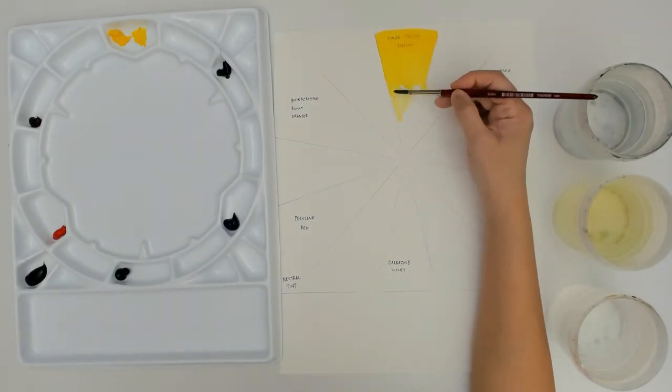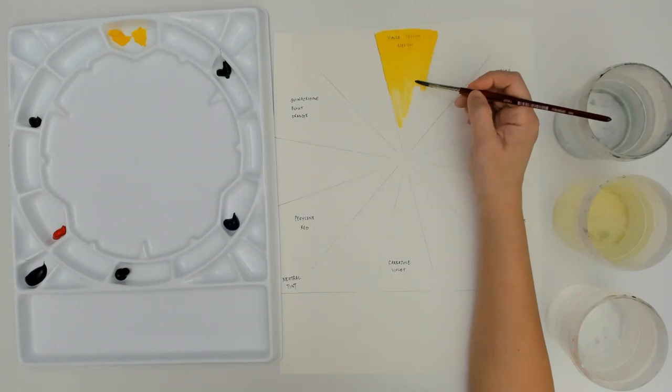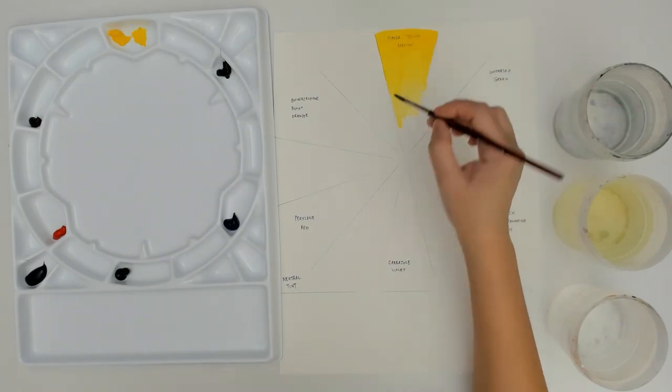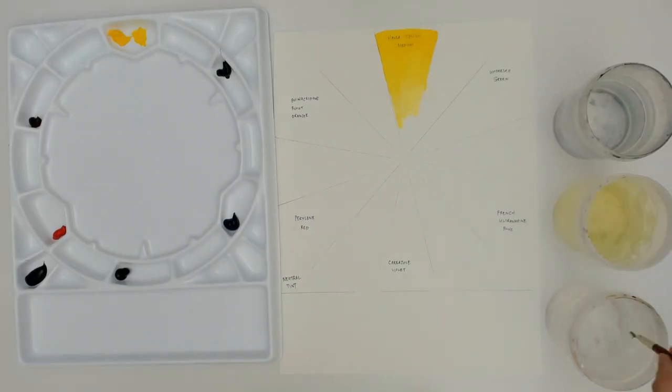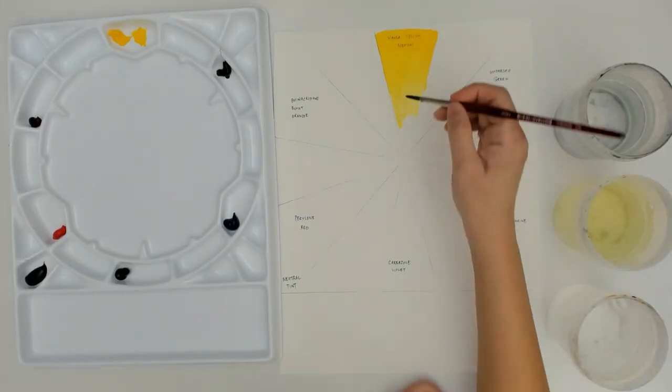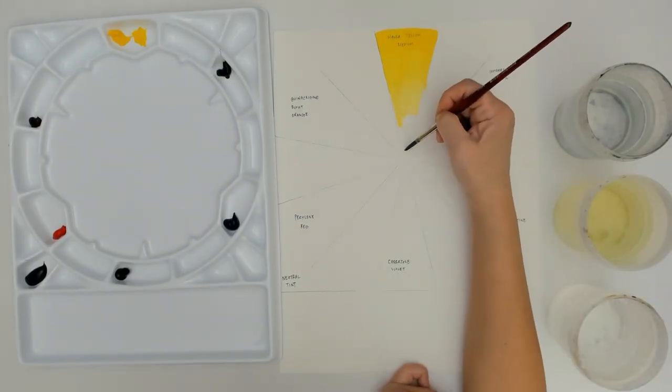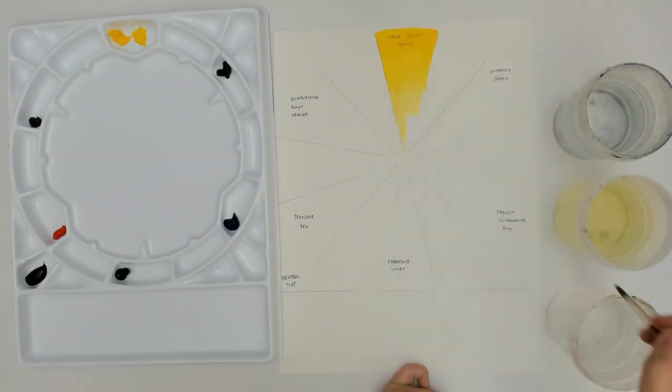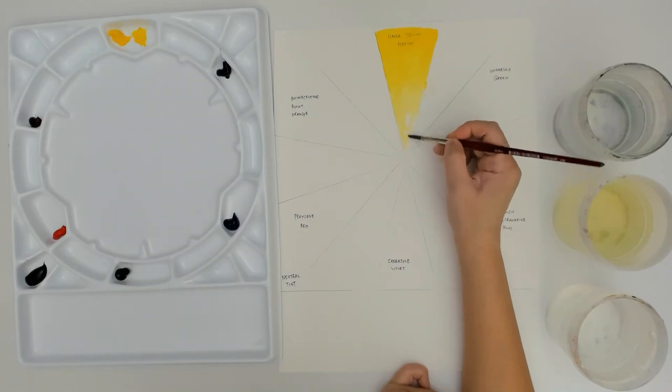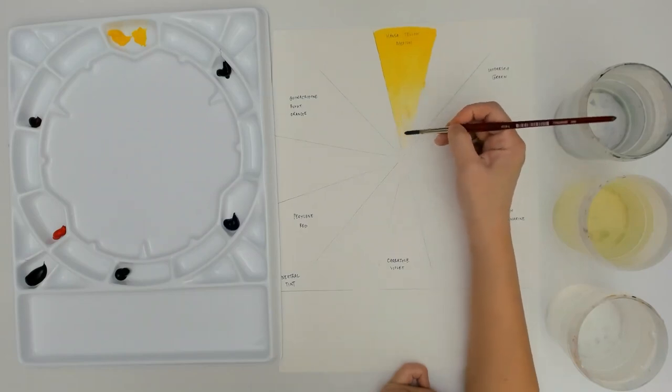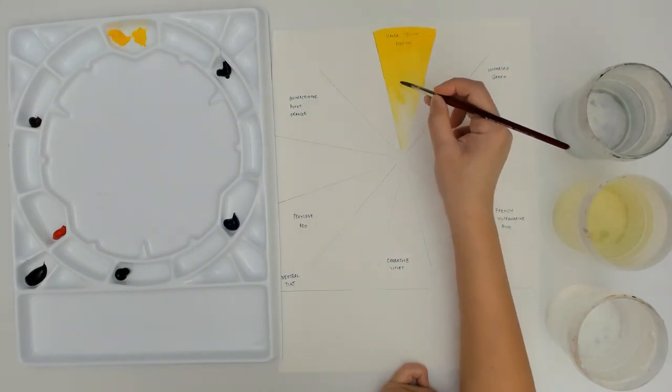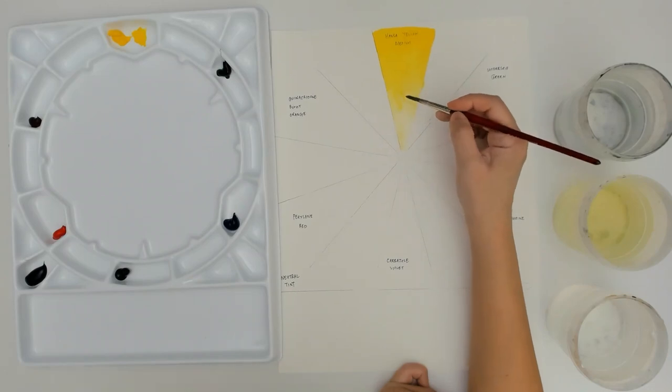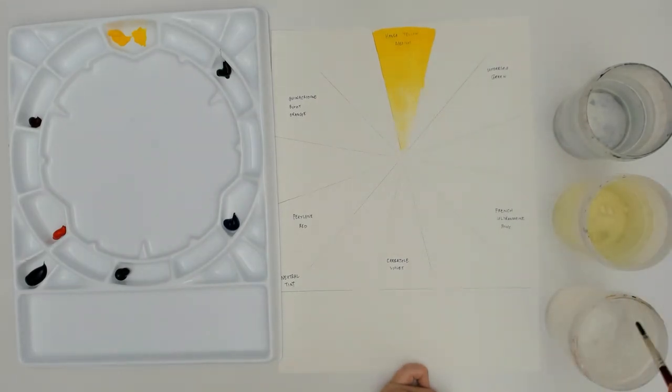And here at the bottom, I'm just watering it down by a lot to get it to be really light so I can see that whole range of values. At the very bottom, it's just really mostly water so I can see that really light value and then I'm just blending the colors up to get it a little bit smoother.